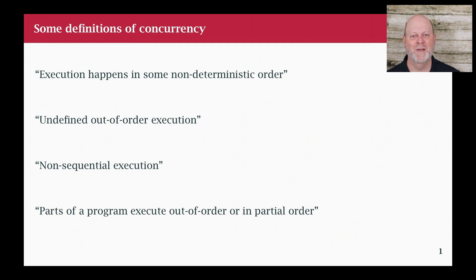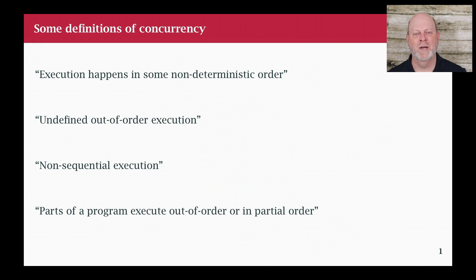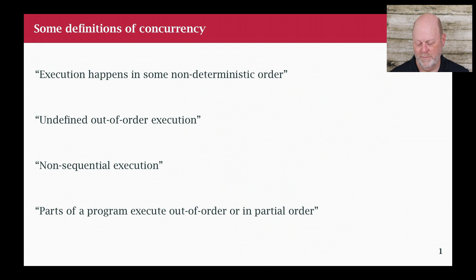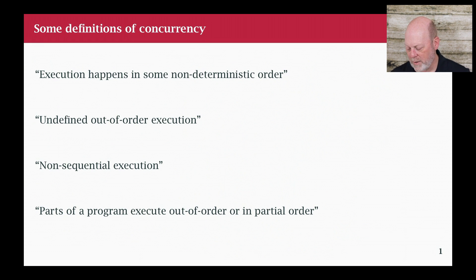What I have on the slide in front of me are some possible definitions of concurrency. How do you define this without going in a circle? We have the notion of execution in some non-deterministic order, or out-of-order execution, or non-sequential — and the problem is I don't want to say concurrency is non-sequential, then ask what is sequential, and be told that's not concurrent, because that's circular. We also have partial order, and there are a bunch of terms I want to briefly describe and put together into a working definition.